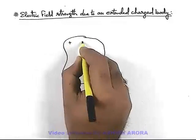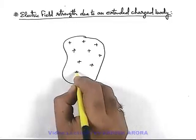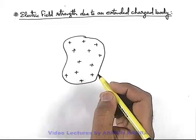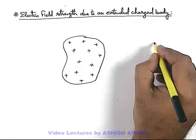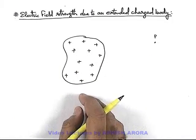Say we are given with a body which is completely charged, may be uniformly or distribution of charge is given by some rule. In this situation we wish to find out the electric field at a point P in the surrounding of the body.